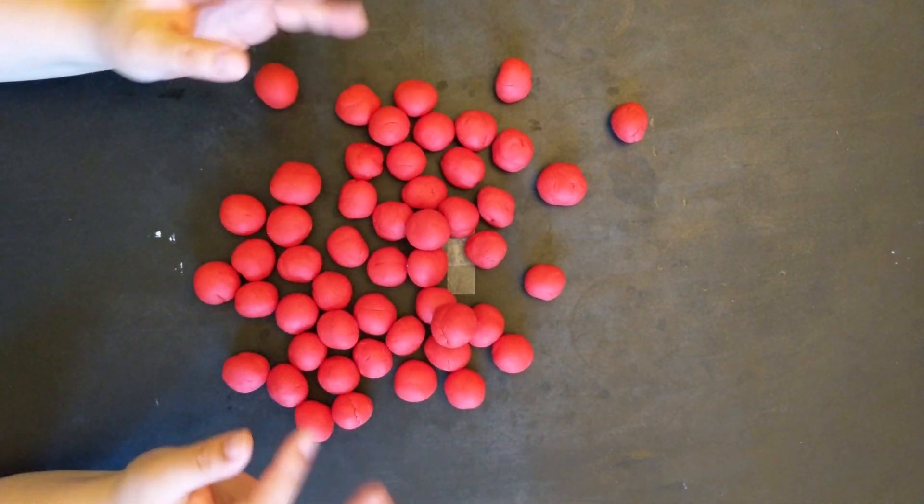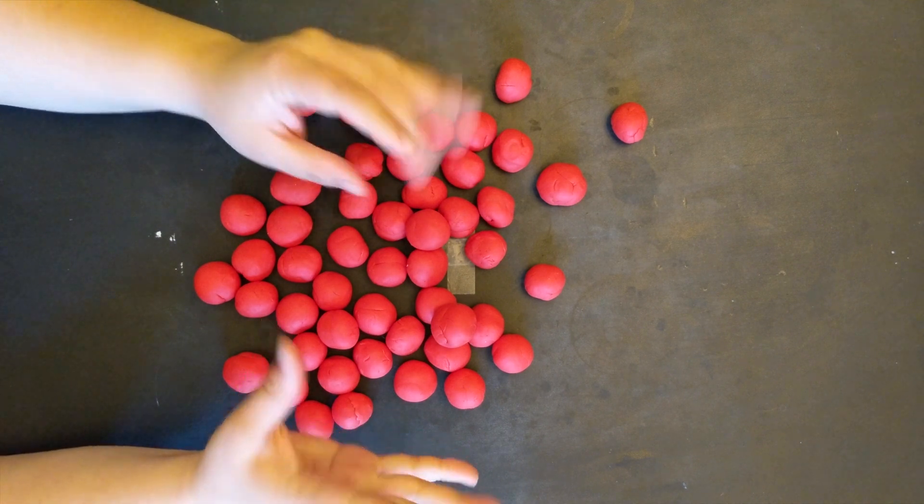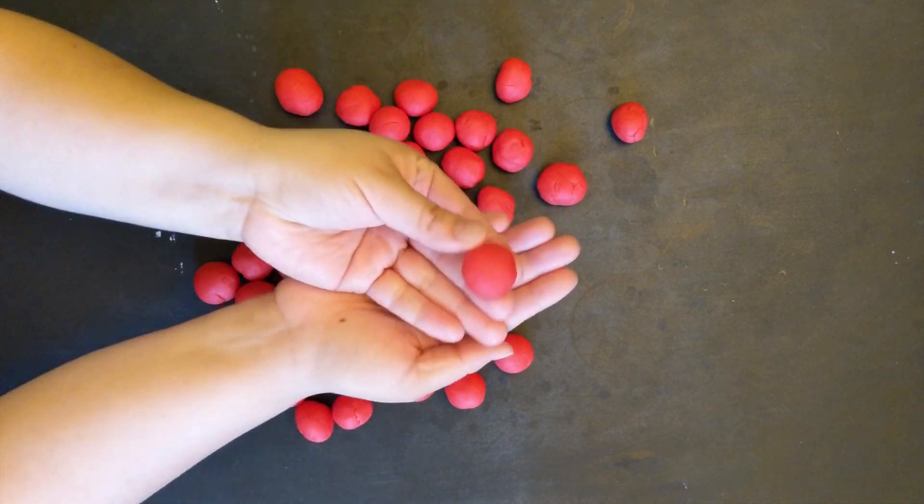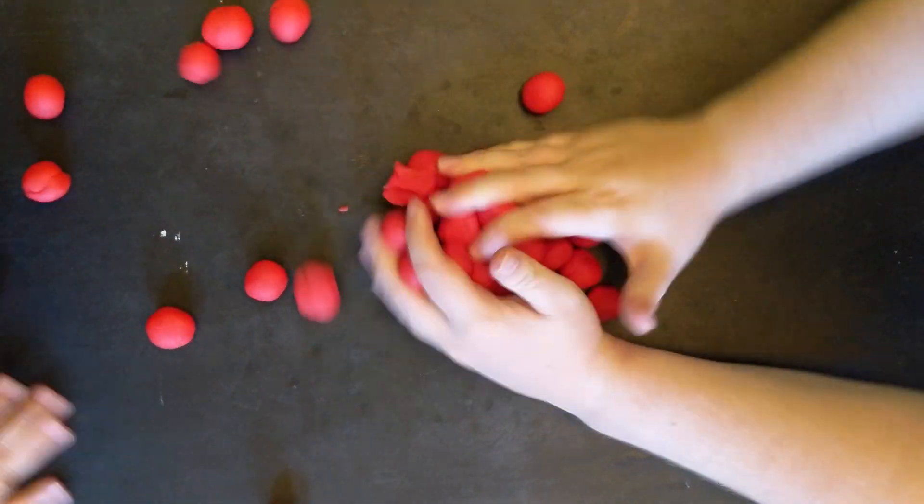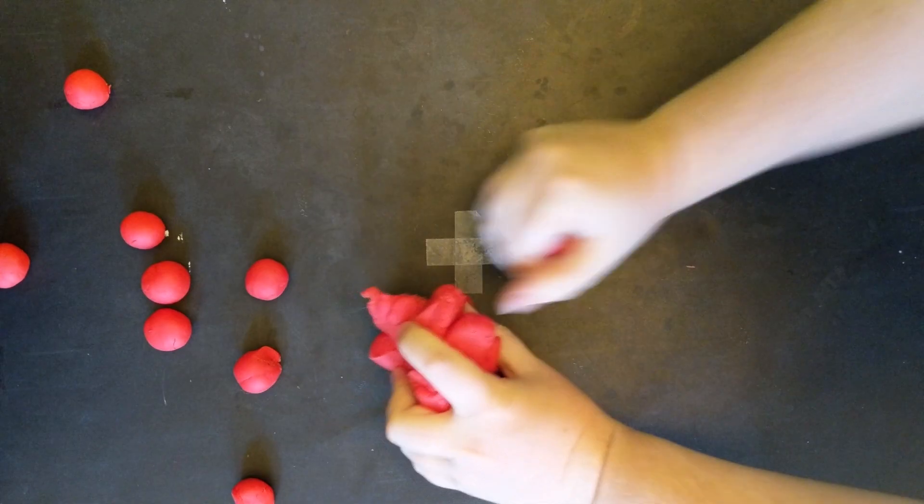Then you're going to choose one of them and put it off to the side. With the other 49 pieces, we're then going to smash them together to create the earth. You may want to get a friend to help you.